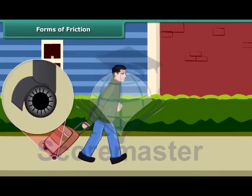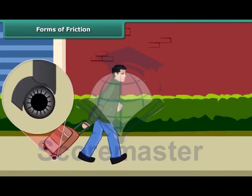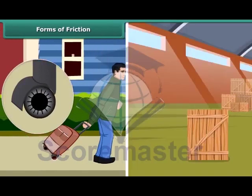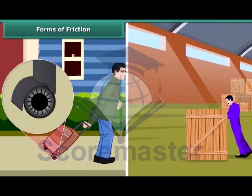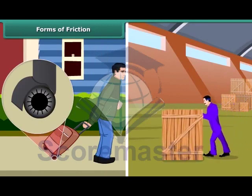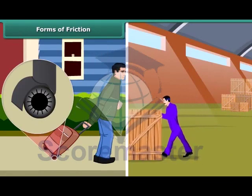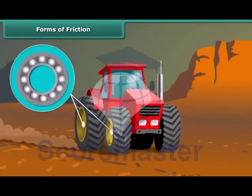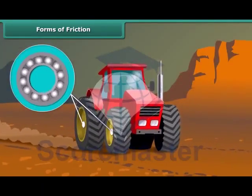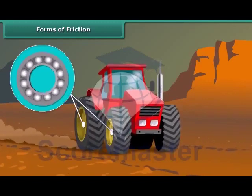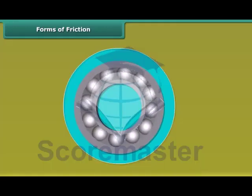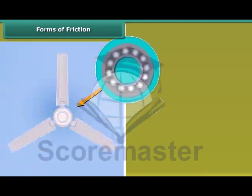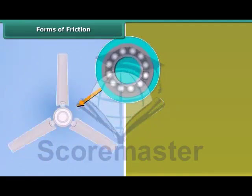The force of friction between the rollers on a body and the surface is called rolling friction. Rolling friction is much less than sliding friction. Since rolling friction is smaller than sliding friction, sliding is replaced in most machines by rolling through the use of ball bearings. Common examples are the use of ball bearings between hubs and the axles of ceiling fans and bicycles.